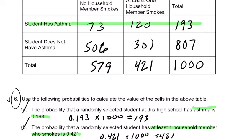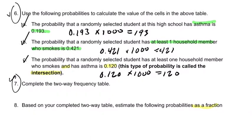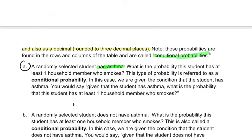The condition asthma restricts us to the first row, and there's only 120 people in that row that have at least one household member who smokes. So it's 120 out of the condition, which is this row right here, or a total of 193 students. So that condition restricts us to that row right there, and that's 120 over 193. 120 divided by 193, about 62%. So that's the conditional probability.